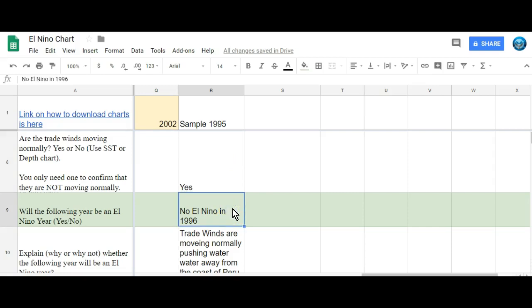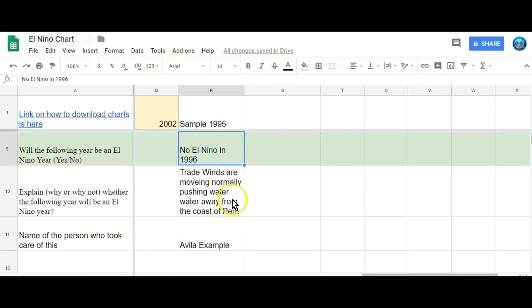Will there be an El Niño the following year? No. How come? Because everything's moving normally. The trade winds are moving just fine. So explain whether or not it will. Trade winds are moving normally. They're pushing water away from the coast of Peru.